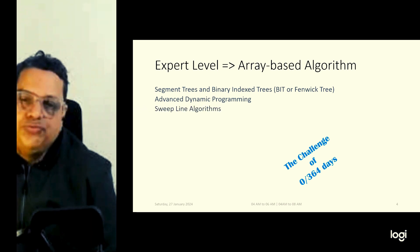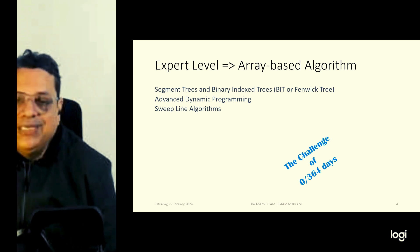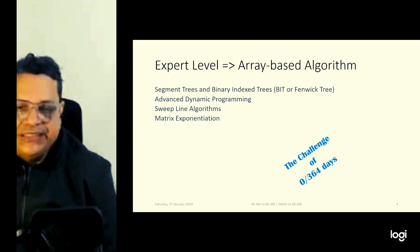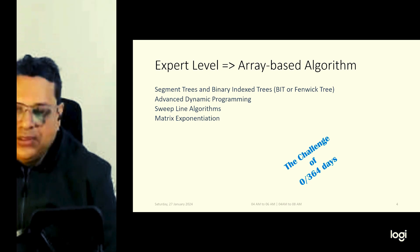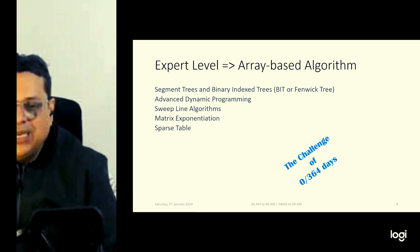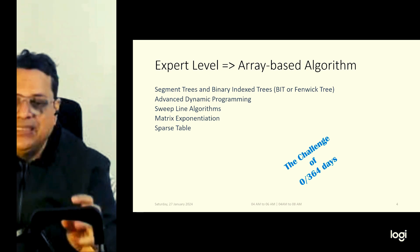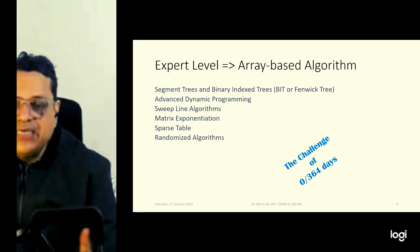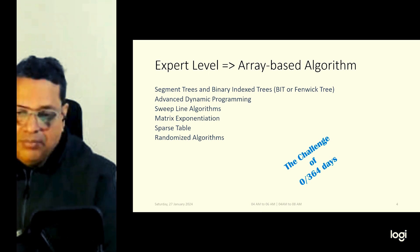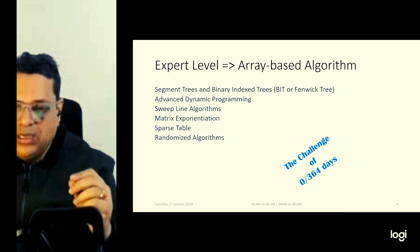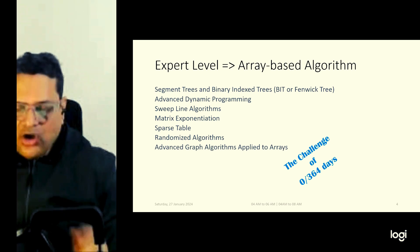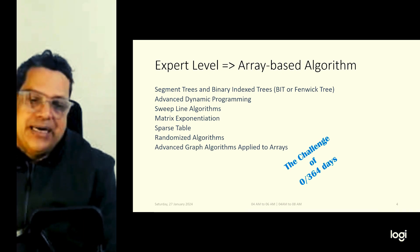Another expert segment is the sweep line algorithm, covering problems involving intervals or points on a line, like finding the maximum number of overlapping intervals. Next is matrix exponentiation, used for solving linear recurrence relations — very useful and important. Then there is the sparse table, used for range minimum and maximum queries especially when the array is immutable. The next segment is randomized algorithms like QuickSelect for finding the kth smallest or largest element. Finally, advanced graph algorithms applied to arrays — finding strongly connected components, shortest path, or minimum spanning tree in grid-like array structures.